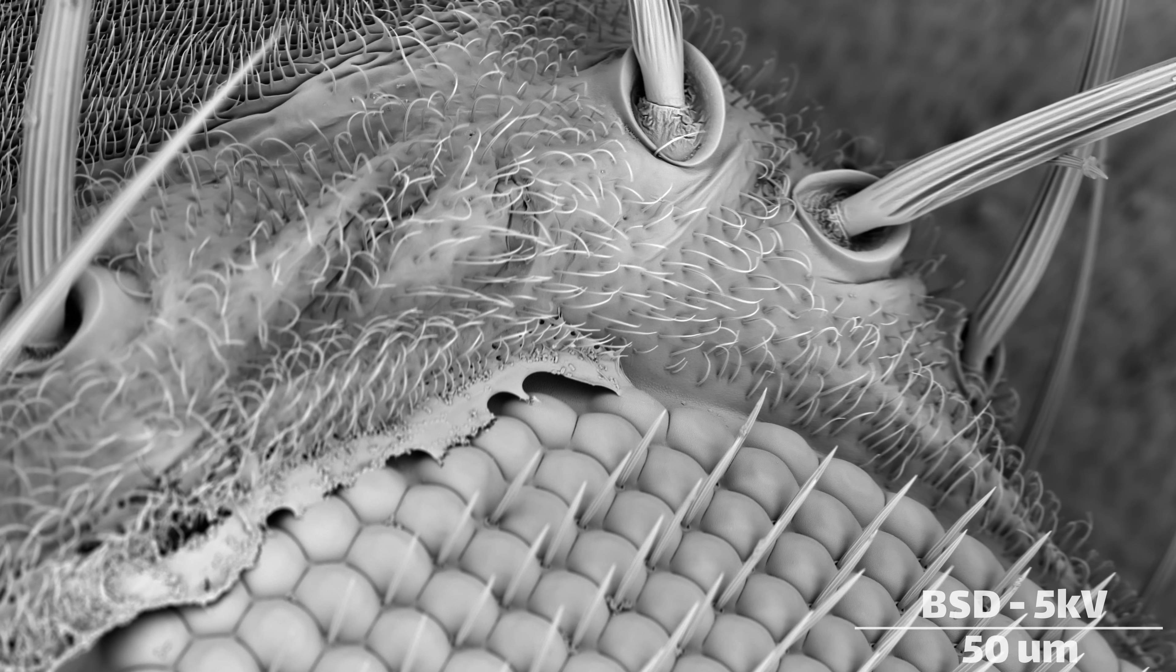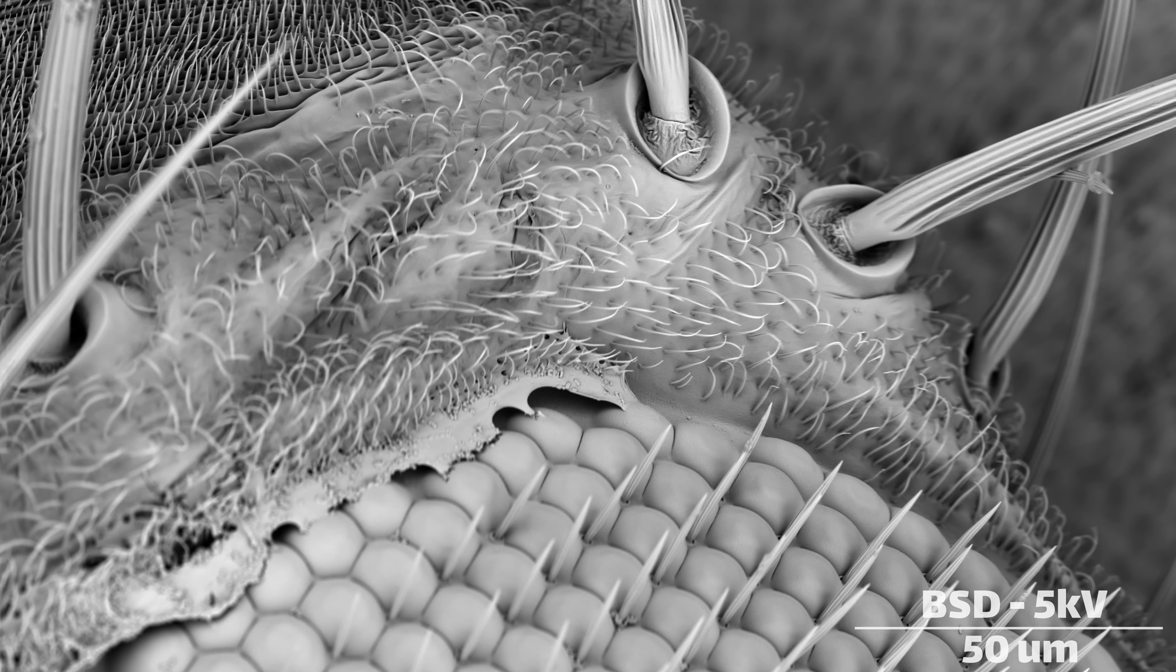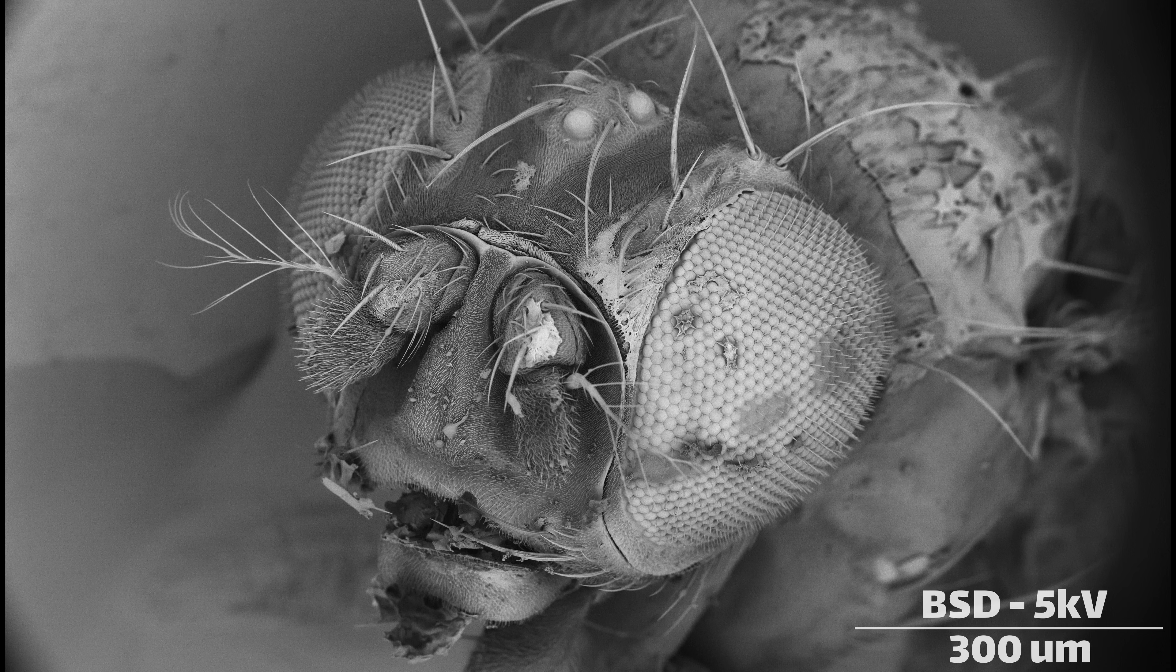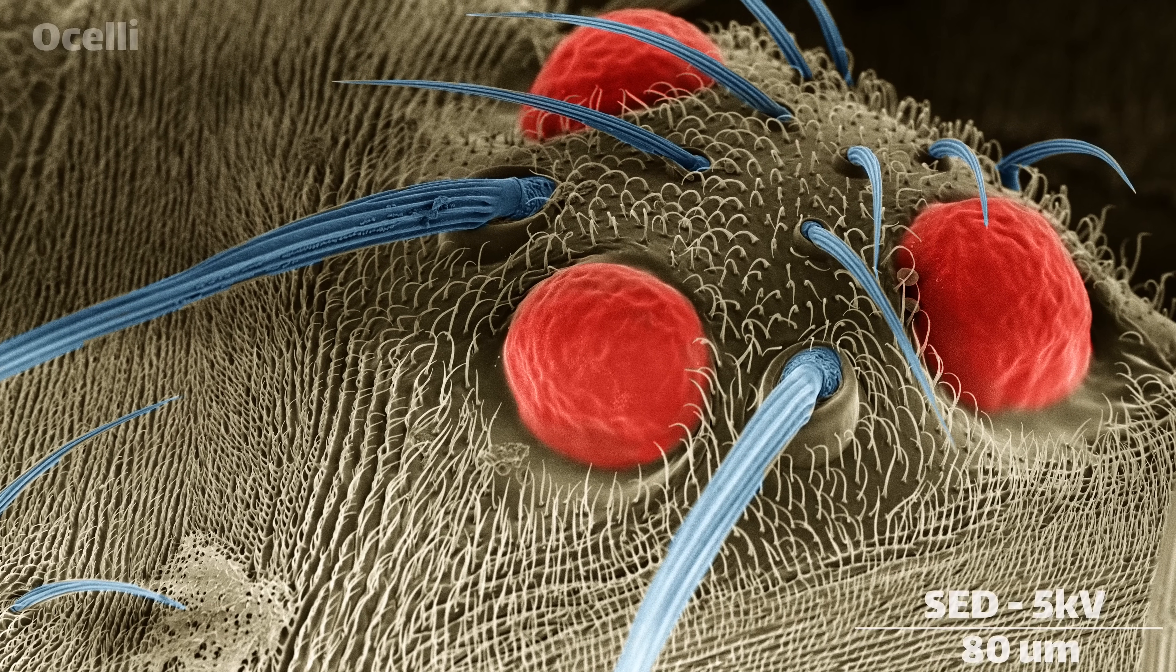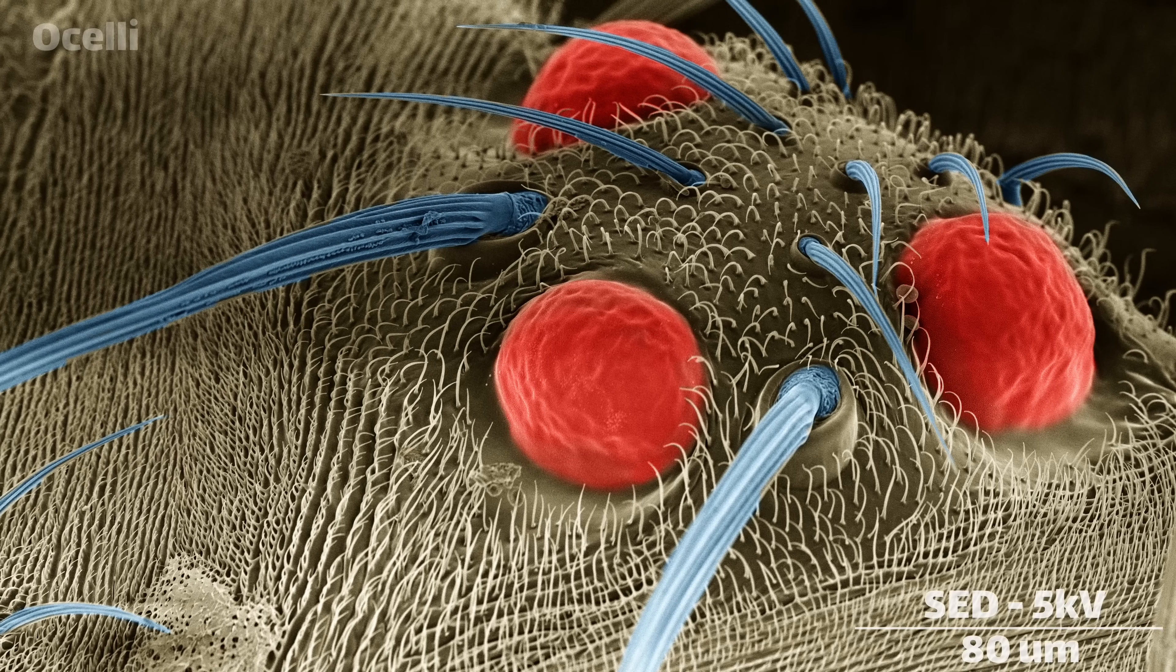Drosophila also have another organ that can sense light. These are called ocelli, and a fruit fly has three arranged in a triangle on the top of their forehead. Unlike the main compound eye, these have a single giant corneal lens with many photoreceptors inside.